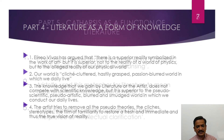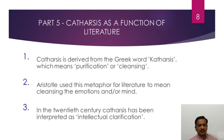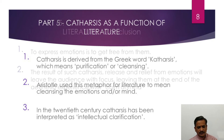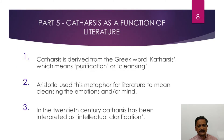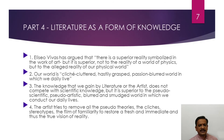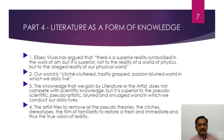Modern literary theorist Eliseo Vivas argues in favor of literature and art because he believes that there is a superior reality symbolized in the work of art. He adds that this is not superior to the world of physics, but to the alleged reality of our physical world — a reality that is strewn with clichés, cluttered, hastily grasped, and passion-blurred — the world in which we daily live. Art or literature provides us a way out of this world.